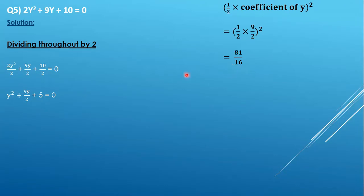Now this 81/16 we will be substituting in this equation, that is we will be adding as well as subtracting. So we get y² + 9y/2 + 81/16 + 5 - 81/16.